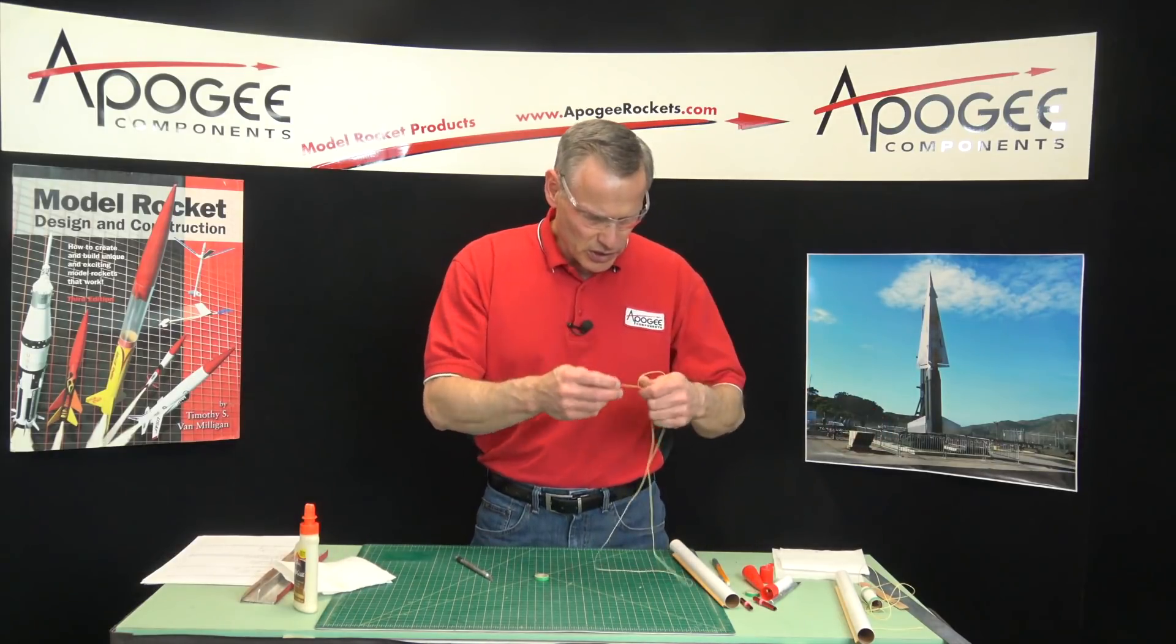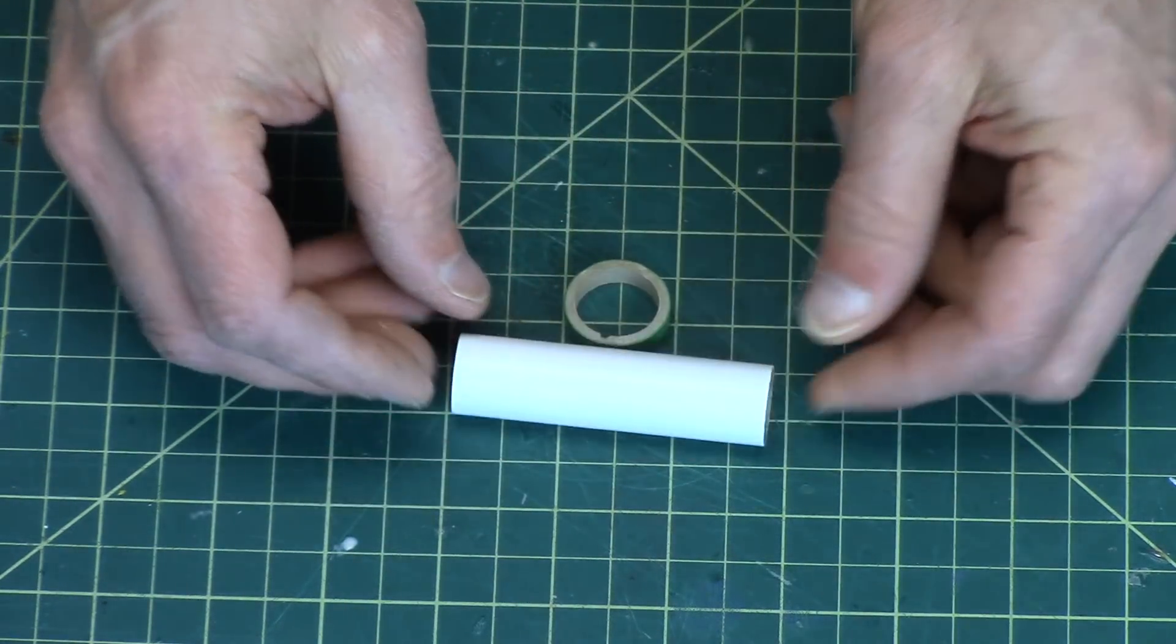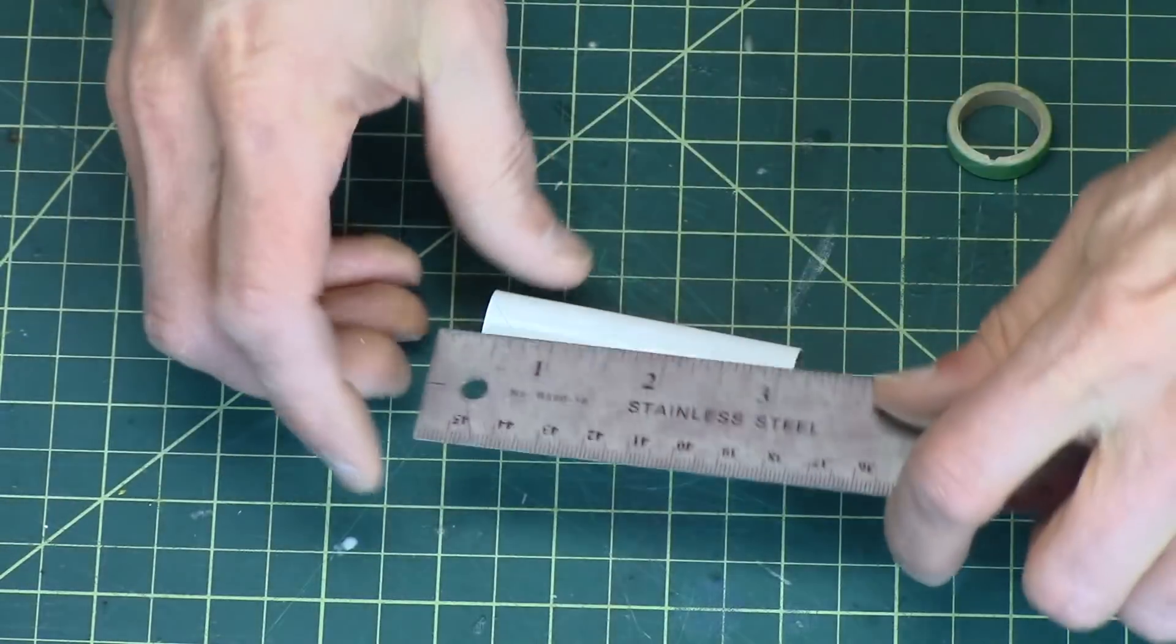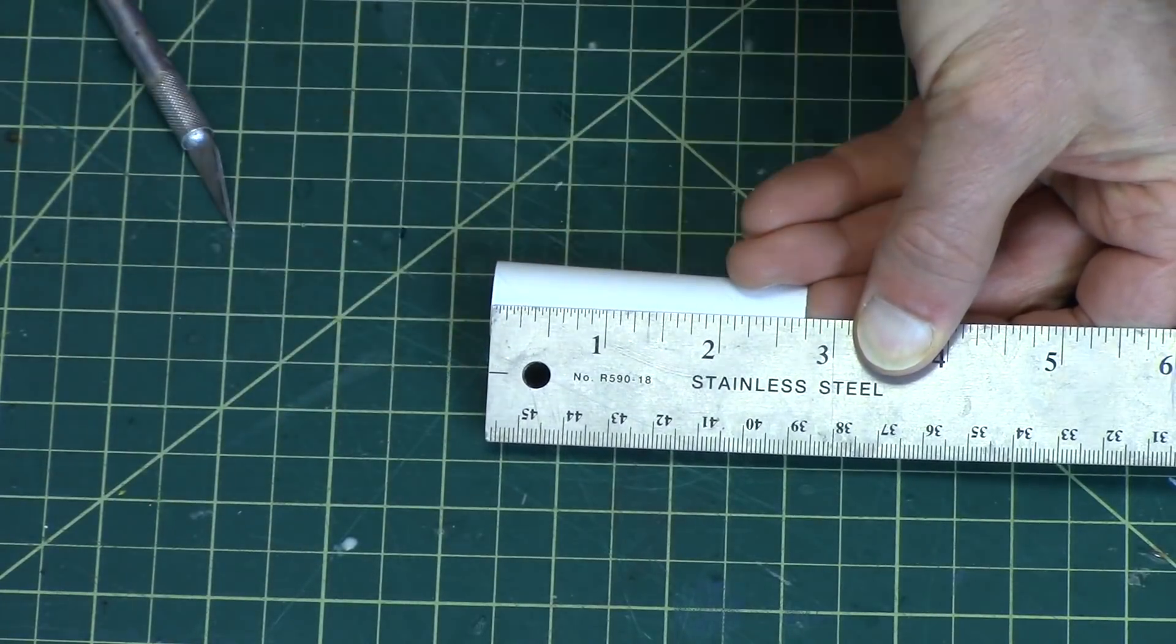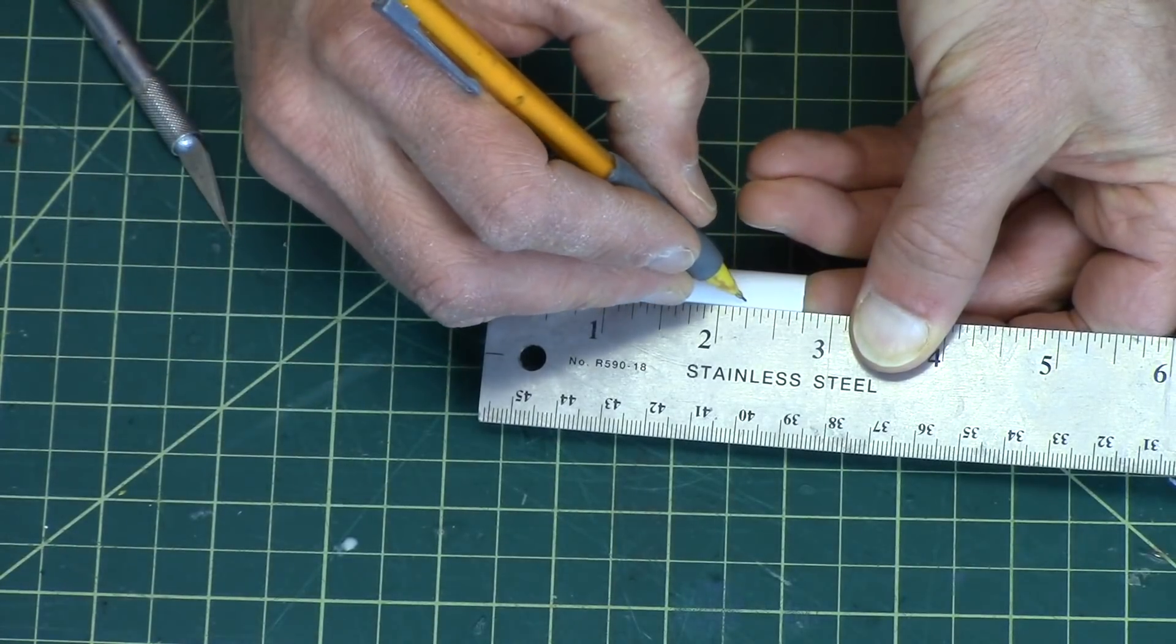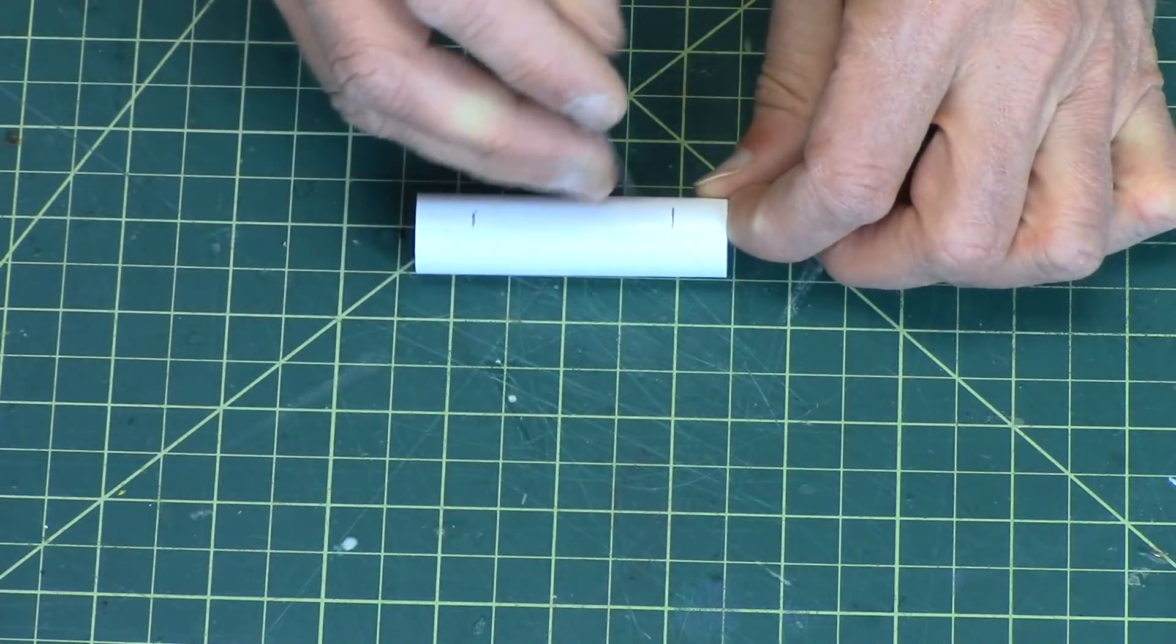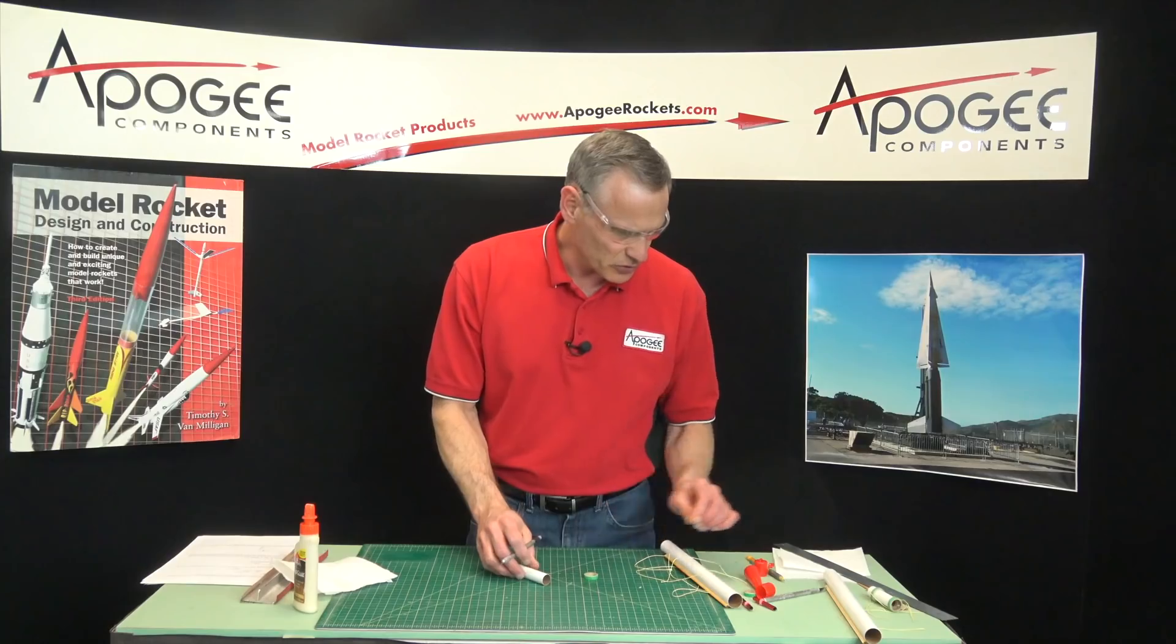Then get the white tube, the little short one, and we're going to mark this in two spots. So this is two and three quarter inches long. We want to mark it at a half inch and then again at two and one quarter inch, so basically a half inch from both sides. And then on one of them we're going to plunge the knife in to make a slot, and this is for the engine hook.